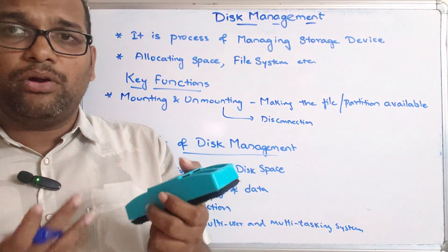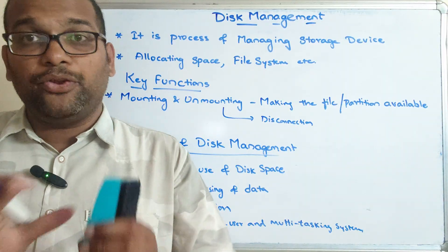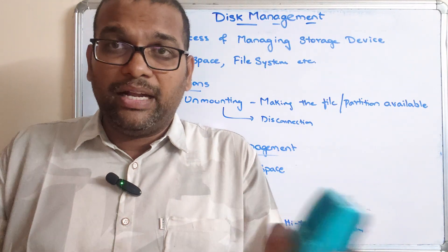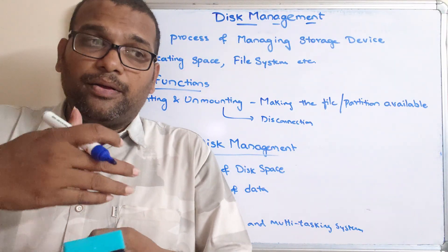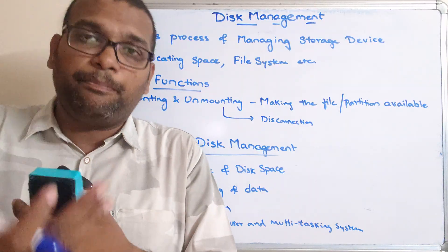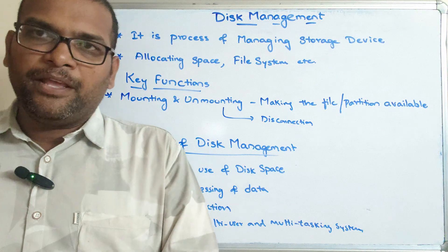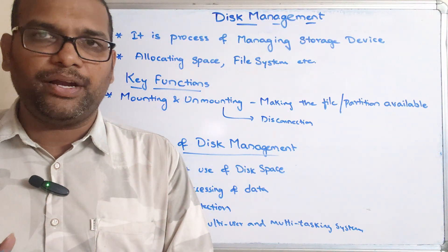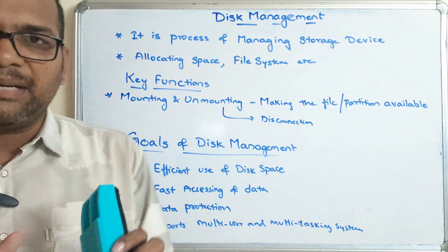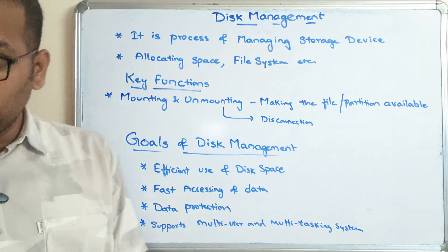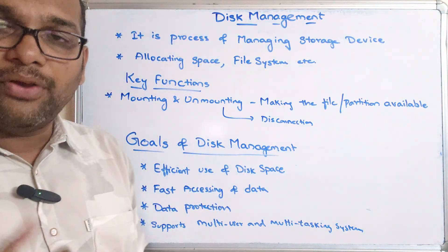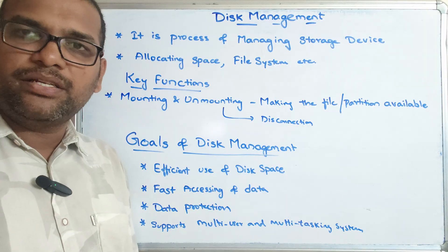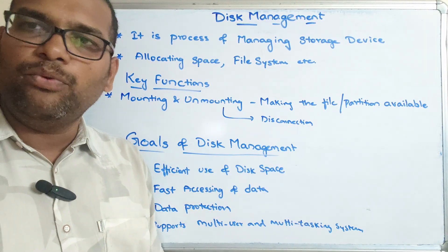In Windows, there is an option called the Disk Management utility where you can find all partitions available in your drive. There you can compress, deallocate memory, allocate new memory, or expand partitions. Go to Control Panel and find Disk Management to see all disk storage details including file systems. These are the key functions and goals of disk management. If you have any queries, feel free to post in the comment section. Please like, share, and subscribe to the channel.